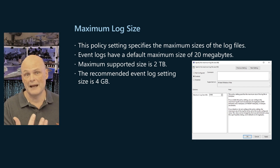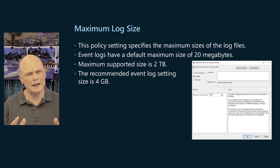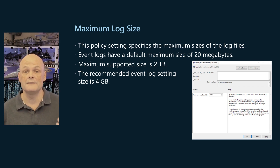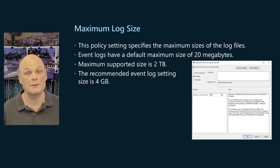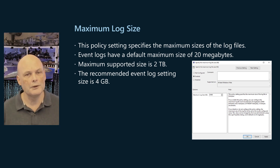The maximum log size policy setting specifies the maximum size of the log files. Individual settings may be specified for the Application, Security, Setup, and System event log channels. The interface in the local group policy editor allows you to enter values as large as two terabytes. If this setting is not configured, event logs have a default maximum size of 20 megabytes. Although there's no simple equation for the best log size, you can estimate a reasonable size by multiplying the average event size by the average number of events per month. The average event takes about 500 bytes and log file sizes must be in multiples of 64 kilobytes.